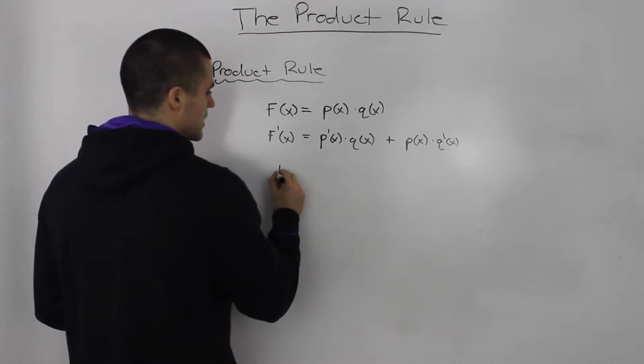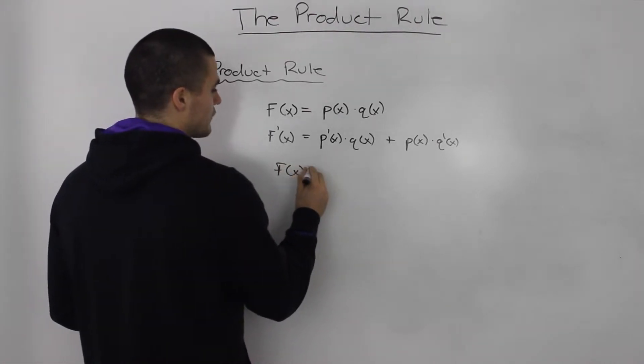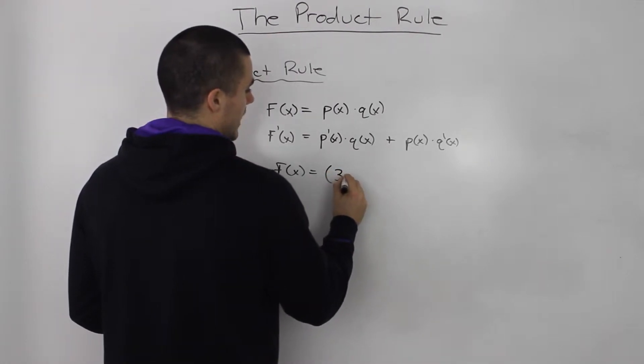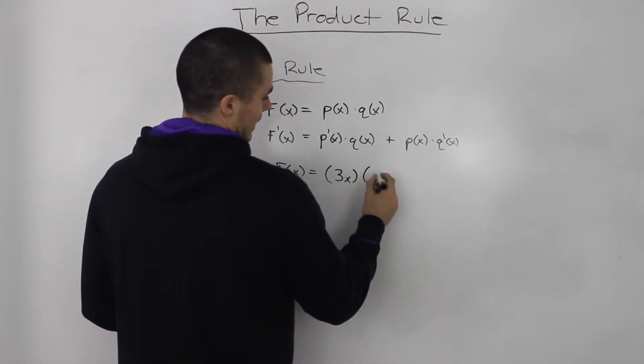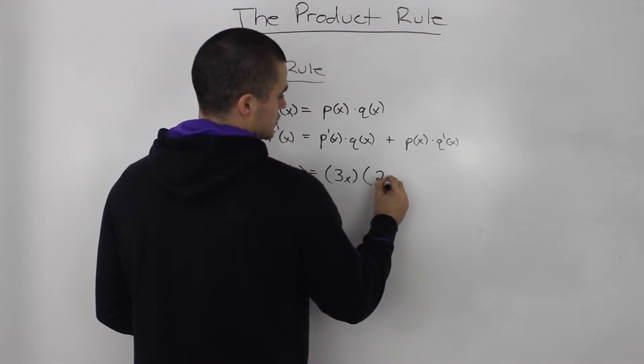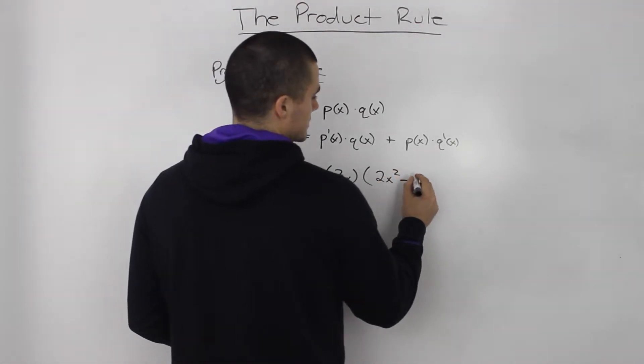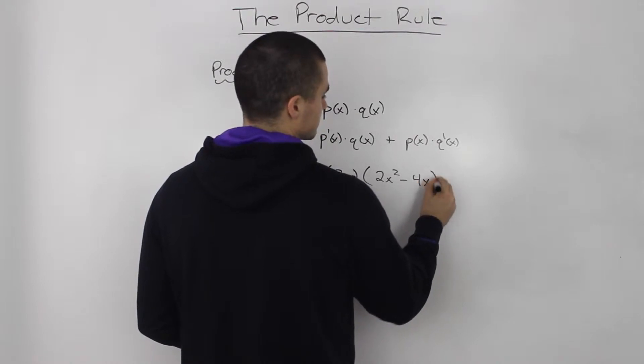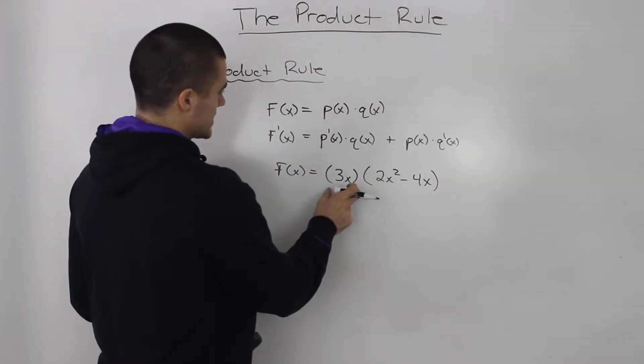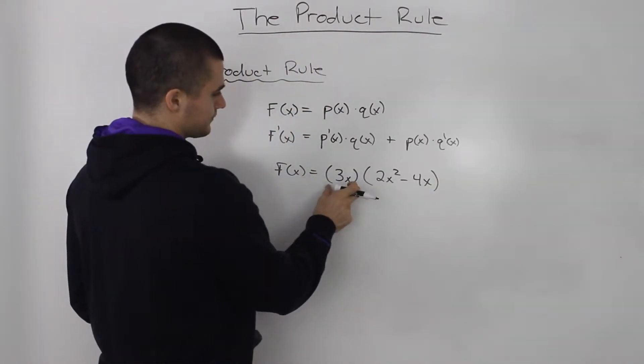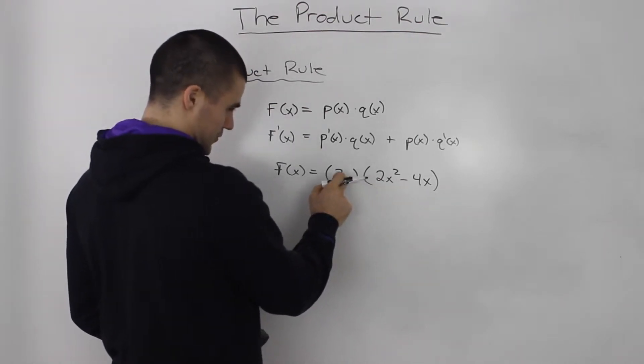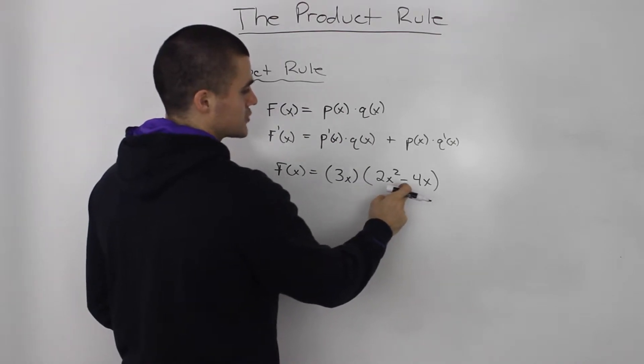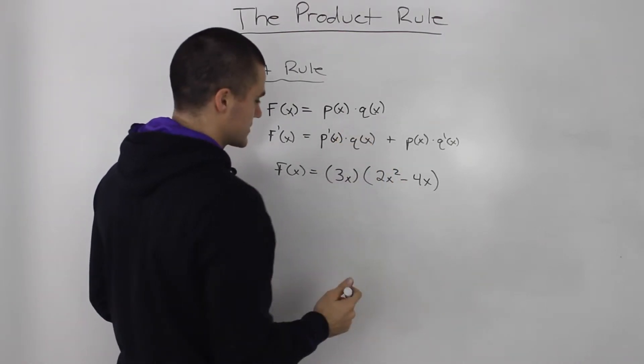Let's do an example. So, if you have f of x equals, let's say I got 3x here. And then here I got, let's say 2x squared minus 4x. So as you can tell, this is a function as a product of two separate functions. This 3x is like this p of x here. And this 2x squared minus 4x is like this q of x.